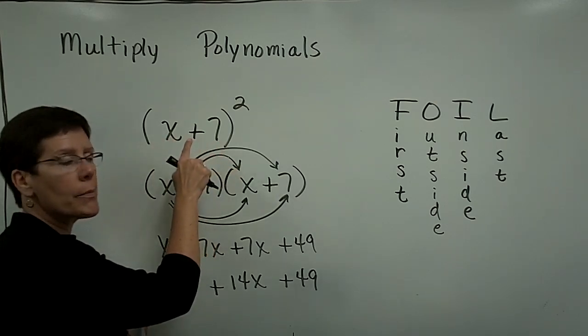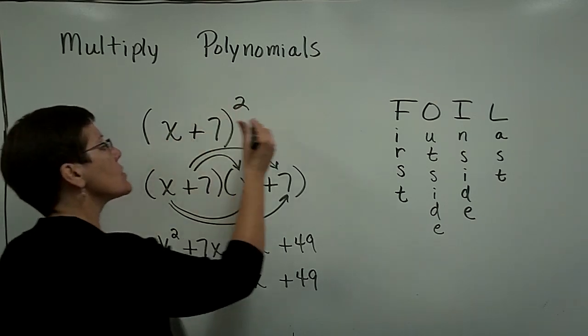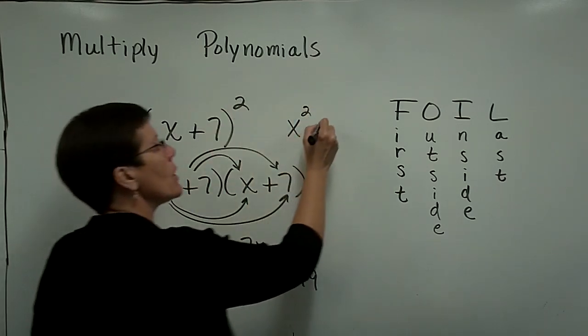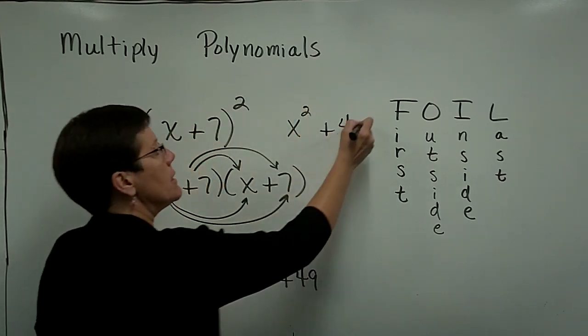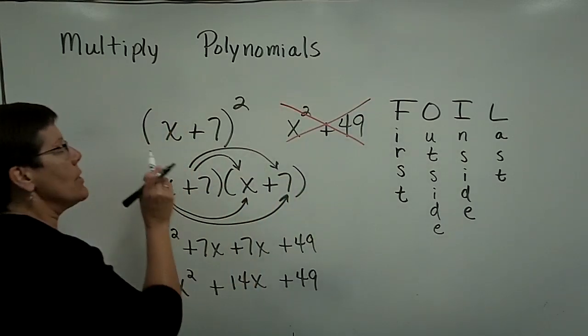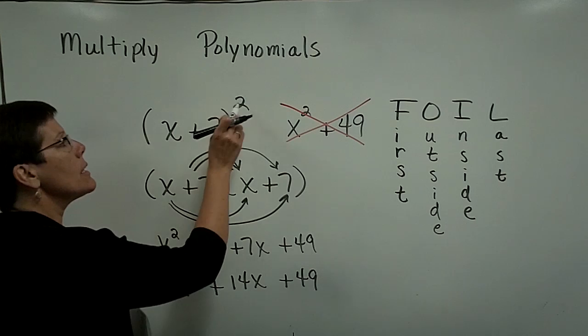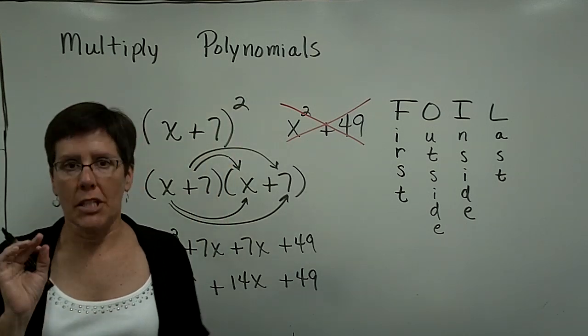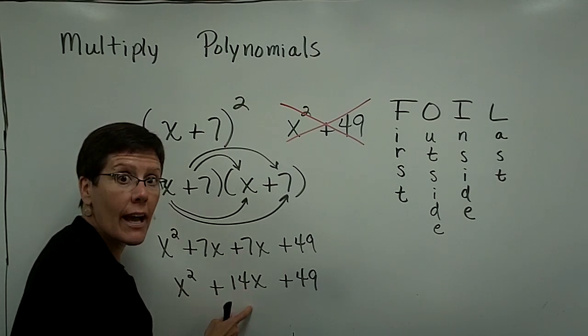Often, people look at this problem and they just say, oh, I'm going to take x and square it and get x squared, and a positive 7 and square it and get a positive 49. And that is not the answer. So if a binomial is squared, please write it down twice so you don't miss that 14x in the middle.